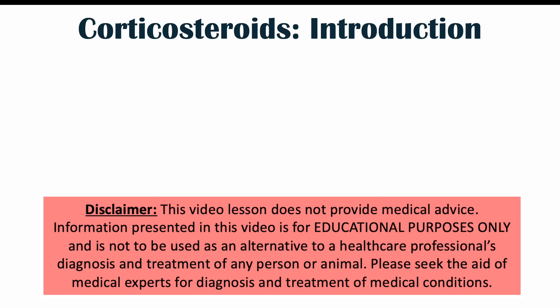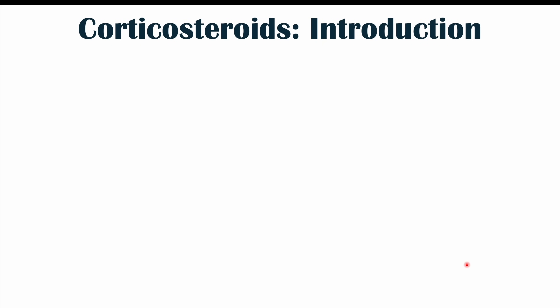Hi everyone. This lesson is on the adverse effects of corticosteroids on the cardiovascular system, the gastrointestinal system, and we'll also discuss some adverse effects on the eyes and on psychiatric health. Before we talk about those particular health consequences of corticosteroid use, let's discuss what corticosteroids are and how they work.